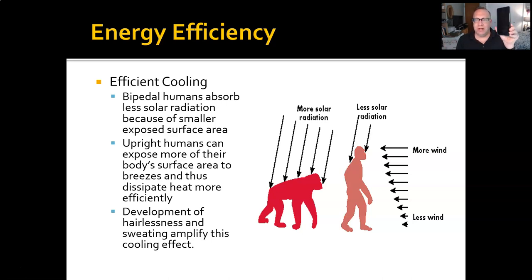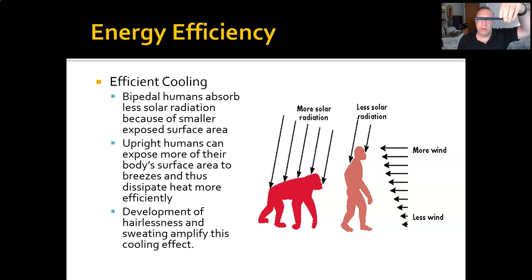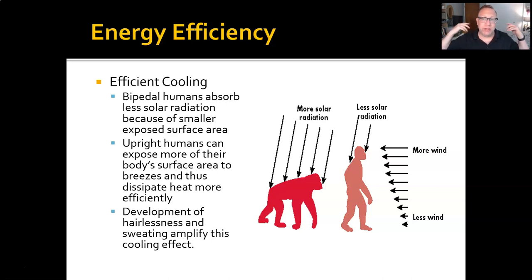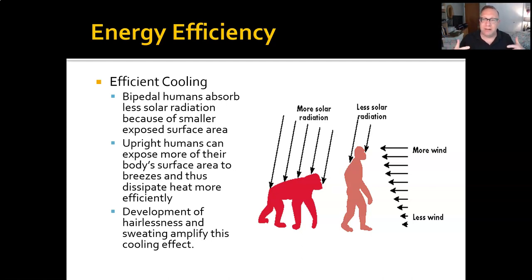The first is that if you take any object and shine the sun directly down on it — the way it does at the equator — it casts a very small shadow. But if you hold it upright, it casts a very large shadow. If it's casting a small shadow, there is very little sunlight directly hitting the body, so there's less energy being put into the body. Additionally, if you are walking upright in a savanna, you are more likely to catch cross breezes than if you're low to the ground — and the wind cools you off more efficiently if you can also sweat.